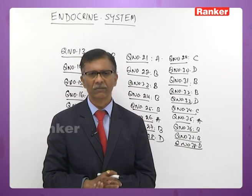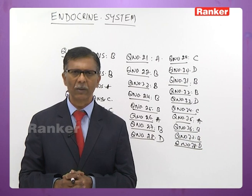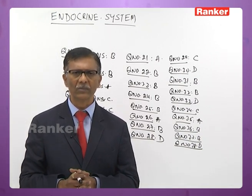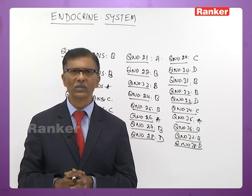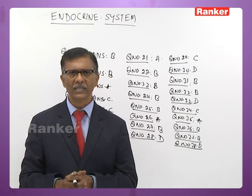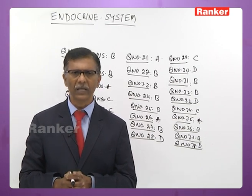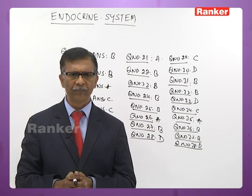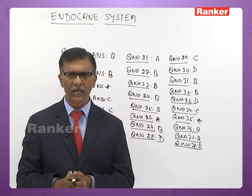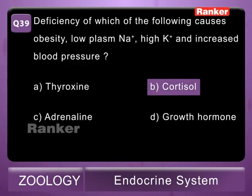Thirty-ninth question: deficiency of which hormone causes obesity, low sodium, high potassium, and increased blood pressure? Cortisol is responsible for all these symptoms — deficiency of cortical hormones results in Addison's disease. Hypersecretion of cortical hormones results in Cushing's syndrome. The correct answer is B — cortisol.